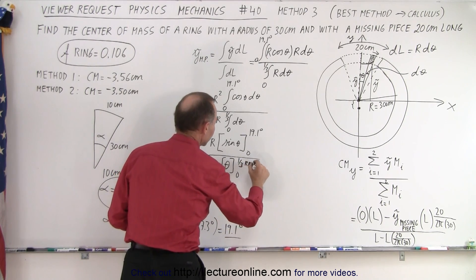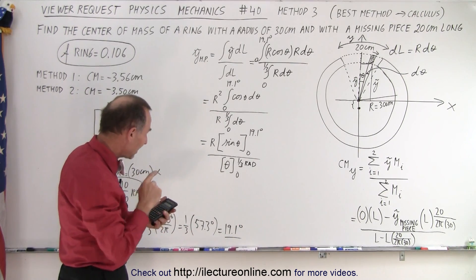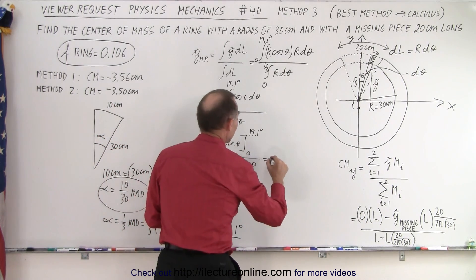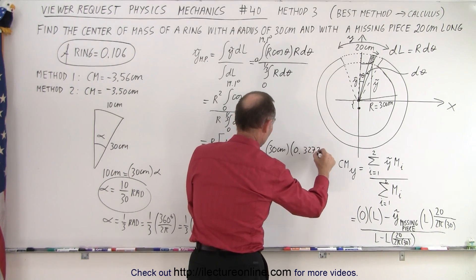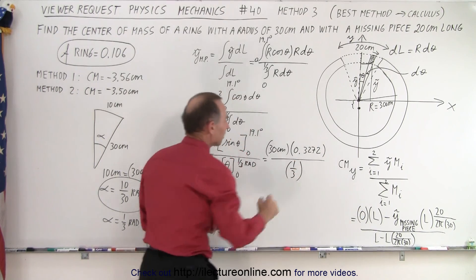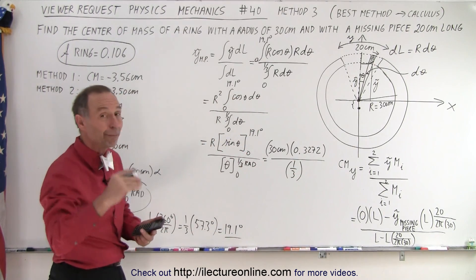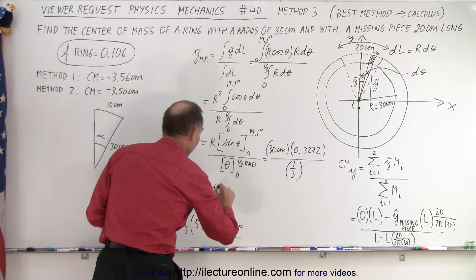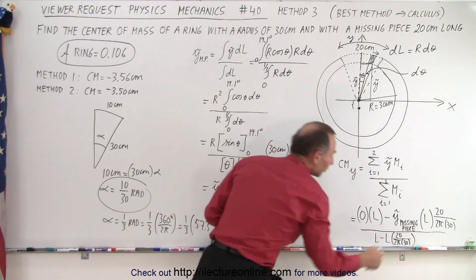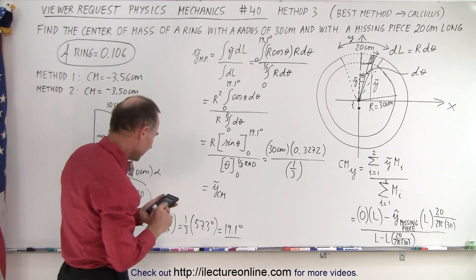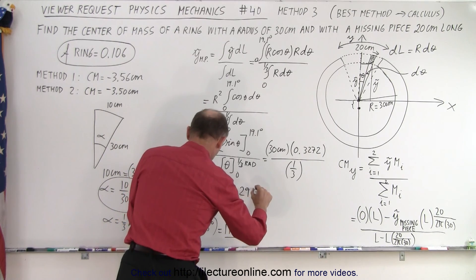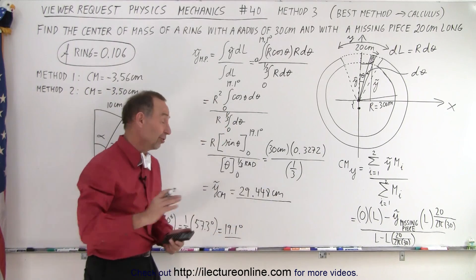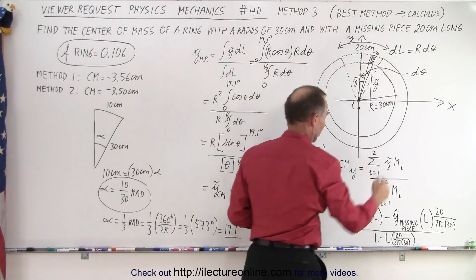Integrating: we have r-squared over r, giving us r, times the sine of θ evaluated from 0 to 19.1 degrees, divided by θ evaluated from 0 to one-third of a radian. So we take the radius, which is 30 centimeters, times the sine evaluated at that angle, which is 0.3272, all divided by one-third of a radian. That gives us the position of the center mass — y-tilde for the center mass — which equals 29.448 centimeters. So that's the true position to three decimal places of the missing piece, which goes into our equation.